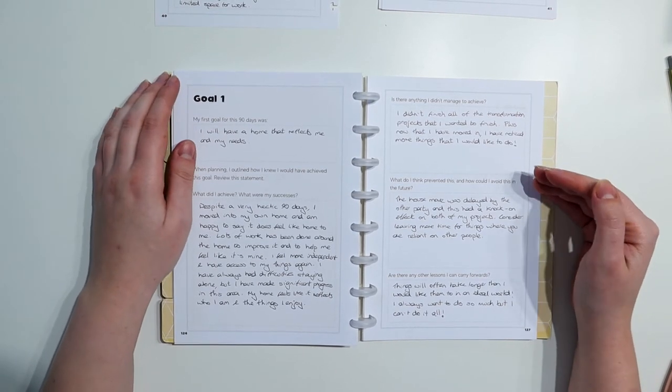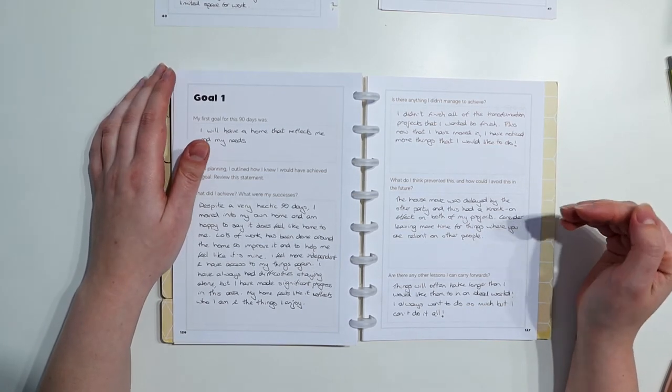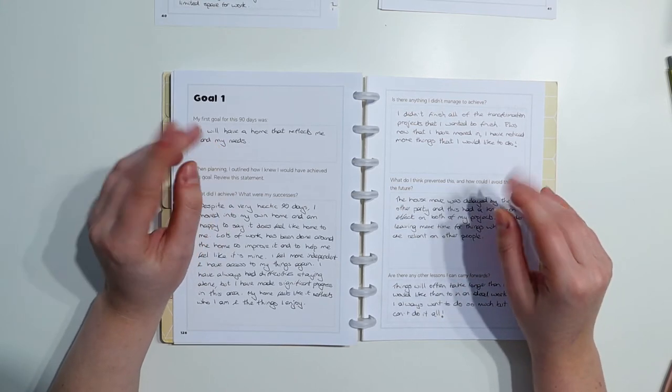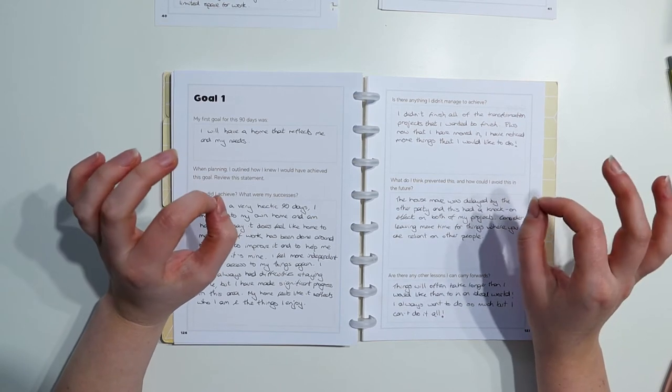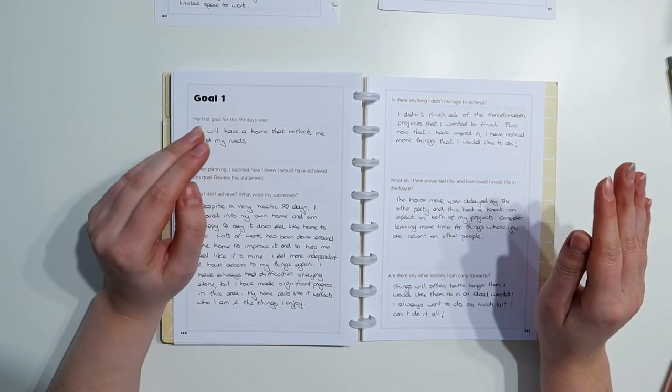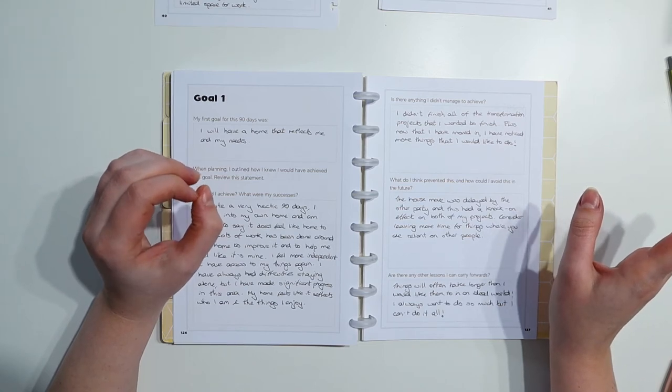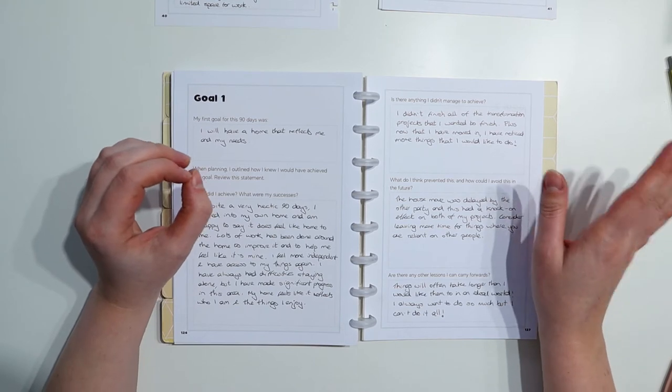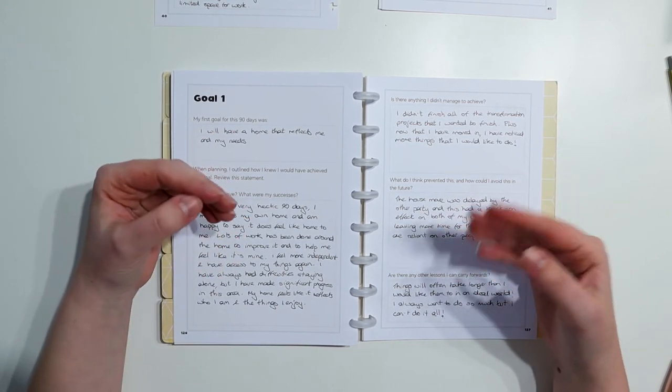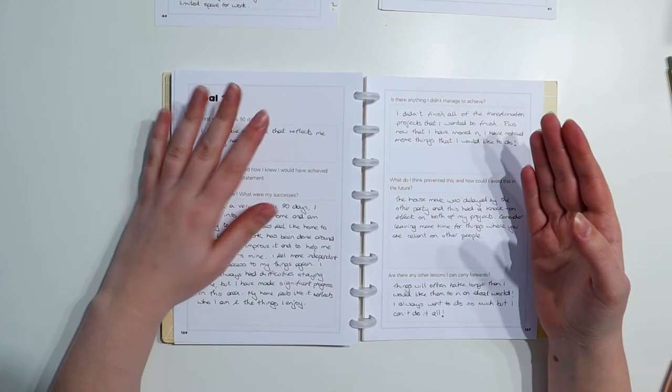So what do I think prevented this and how could I avoid it in the future? The house move was delayed by the other party, and this had a knock on effect to both of my projects. It's consider leaving more time for things where you are reliant on other people. So I planned on moving in in the first month, having my surgery in the second month, and transforming in the third month. As it happened, nothing happened on the house move in month one because the people who I was buying off delayed it. Month two, I managed to move in, and then my surgery was cancelled. So I decided to try and get as much of the transforming and moving done as I could ahead of my surgery. And then month three was kind of out of the equation.